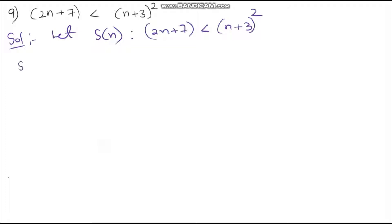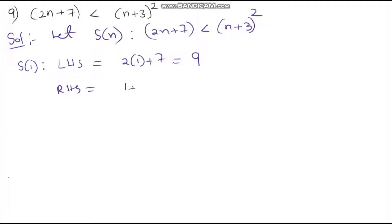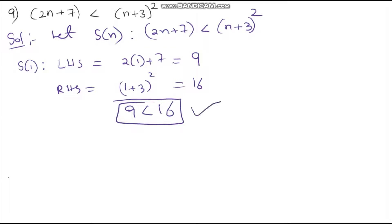For S of 1: LHS equals 2 into 1 plus 7, which equals 9. RHS equals (1 plus 3) whole square, which equals 16. Since 9 is less than 16, this is true. Therefore S of 1 is true.